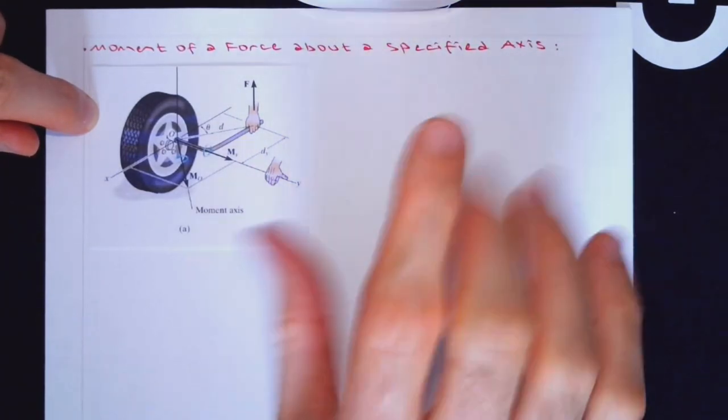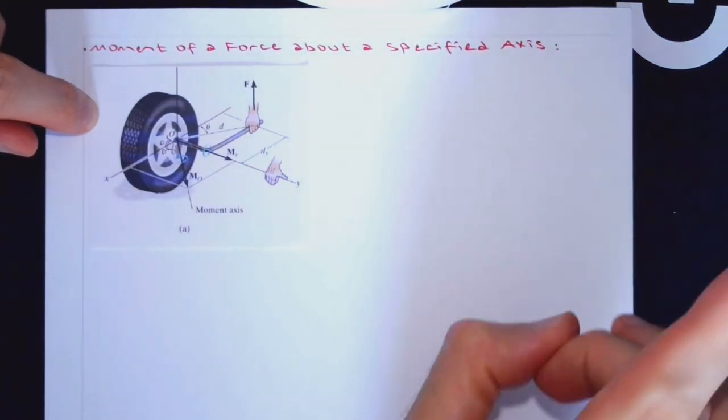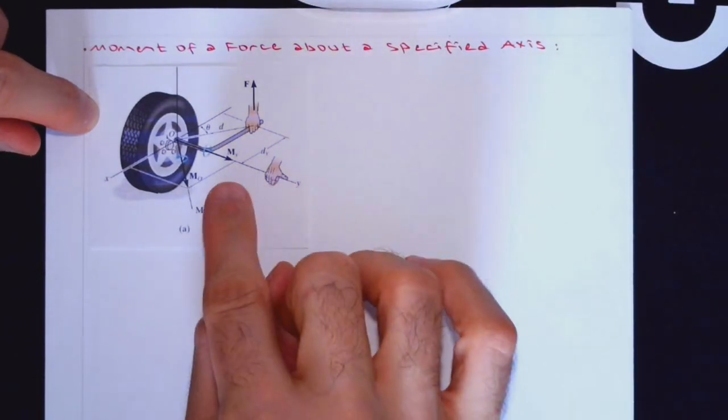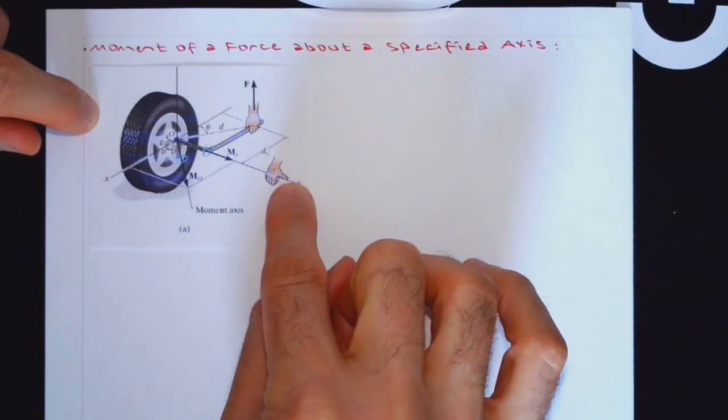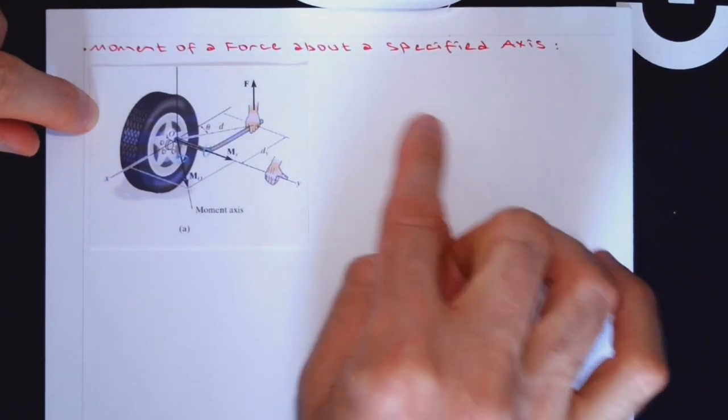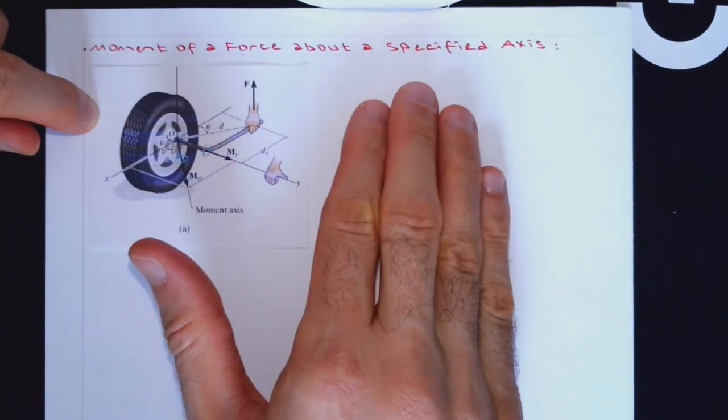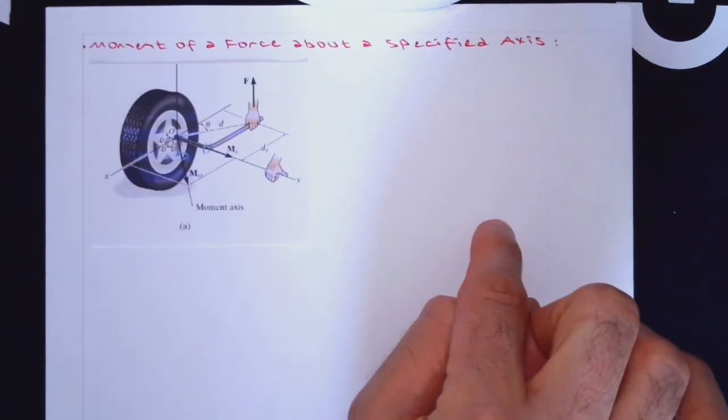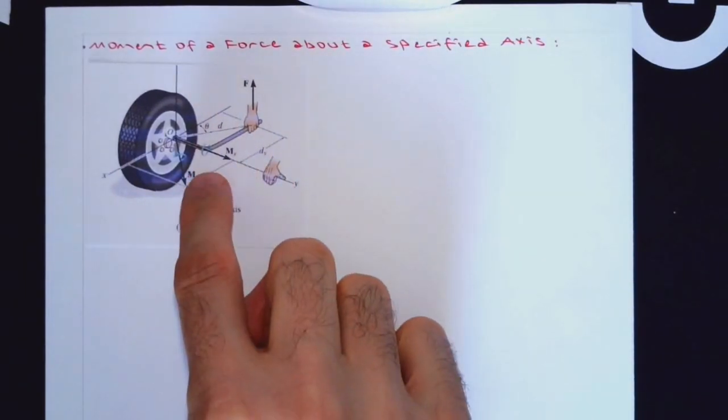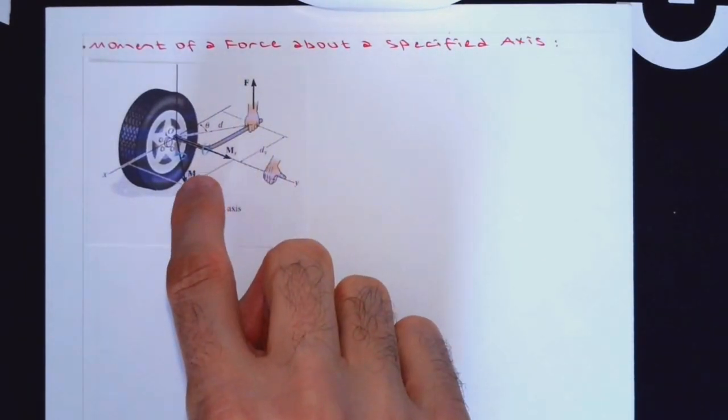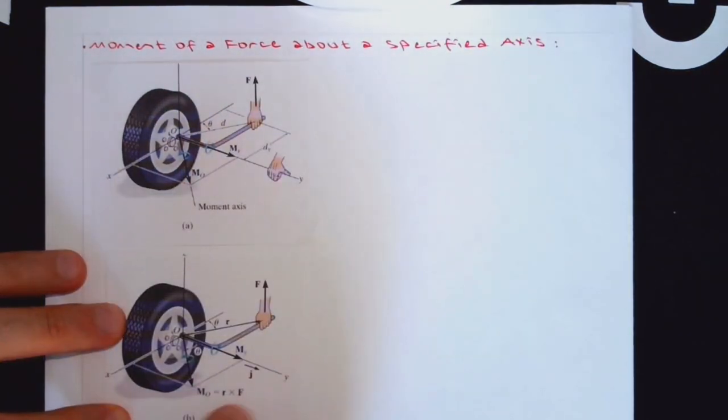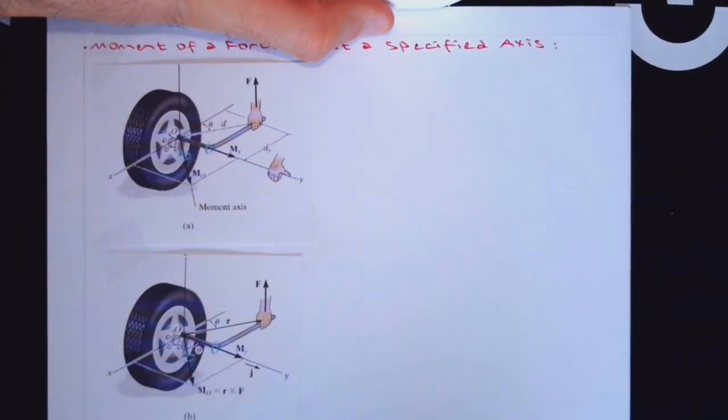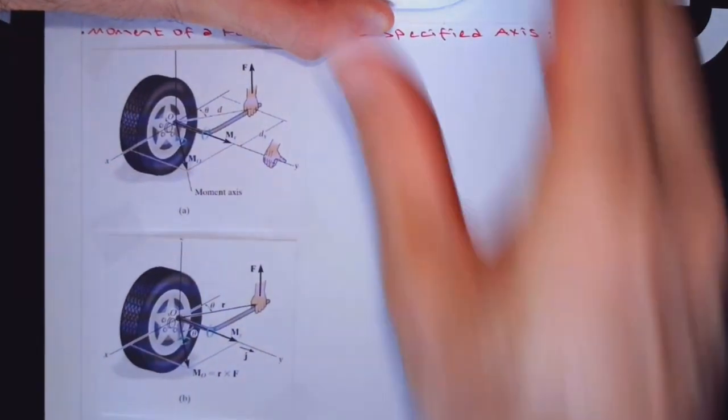All right so long story short this would involve taking projection which you would remember a projection which is parallel to a specified axis was dot product. So this operation will involve both dot product as well as a cross product. Cross product is to get this moment Mo and dot product would be to get projections on a specified axis. So this is Mo which is r times F and what we are doing is the projection.